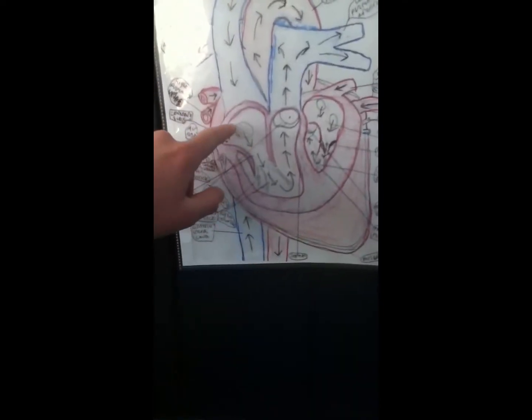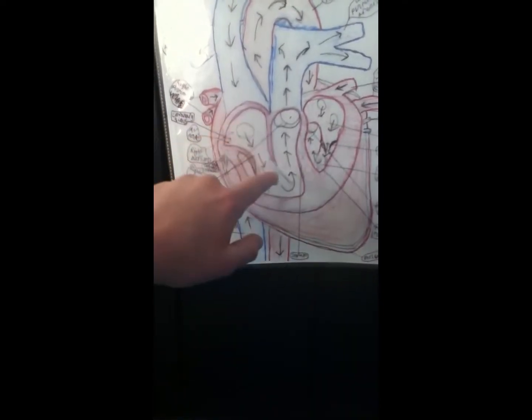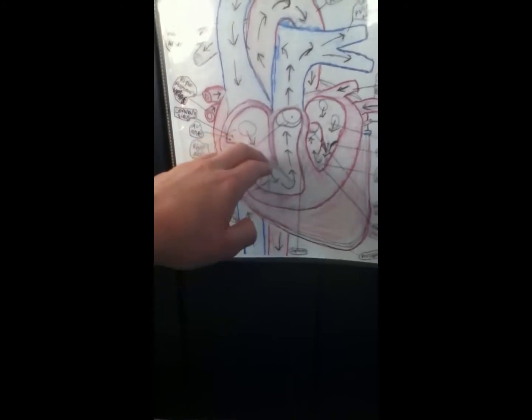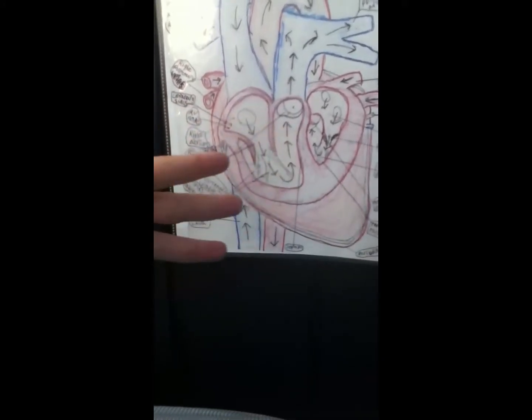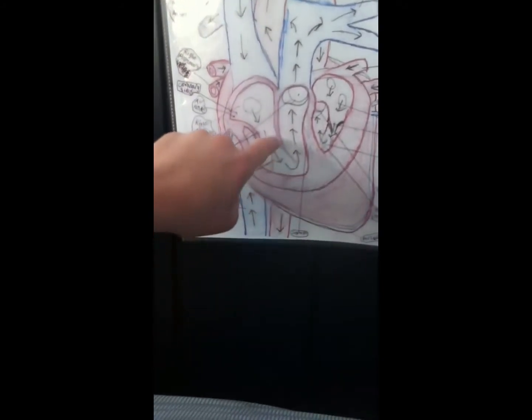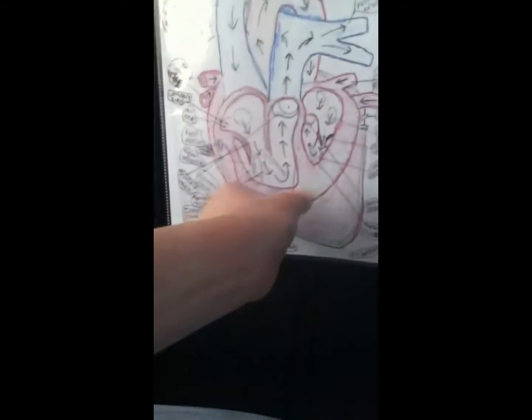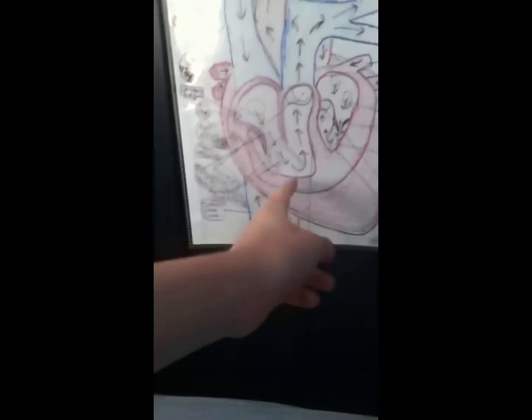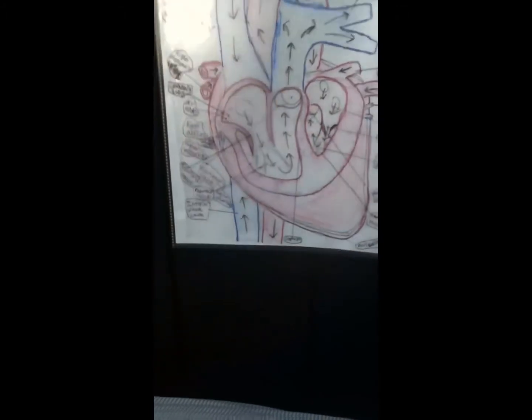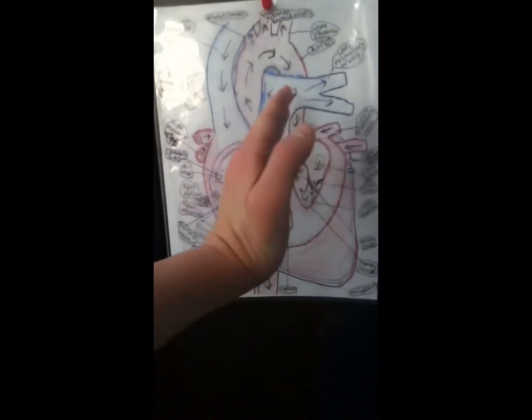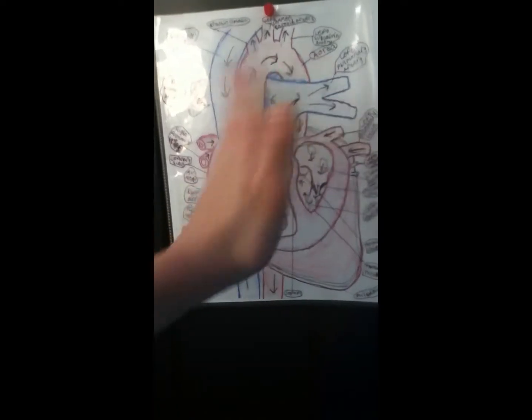From there it goes through the tricuspid valve right here, which has three leaflets, into the right ventricle. The right ventricle then contracts and the blood gets forced through the pulmonary valve, through the pulmonary artery, which goes to the lungs.